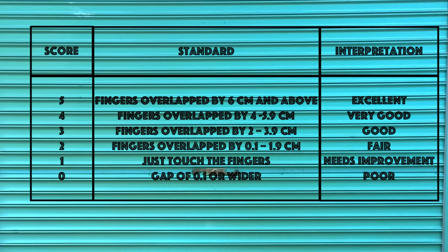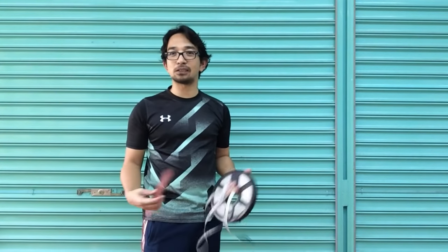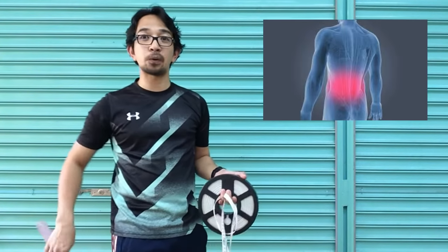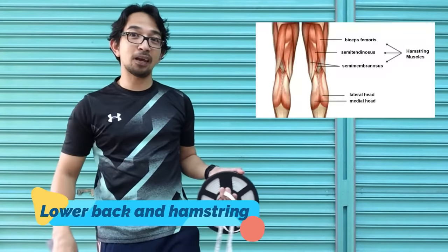This is the scoring for the zipper test. Sit and reach! The purpose of sit and reach is to test the flexibility of our lower back and hamstring.